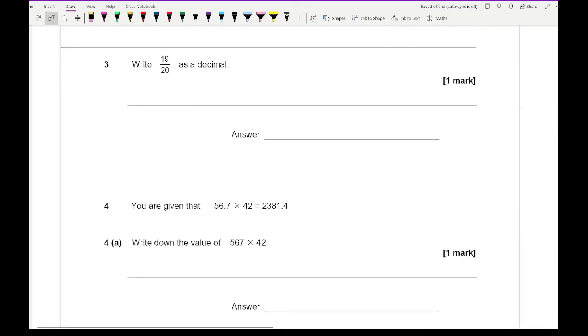Moving on to question three, write 19 over 20 as a decimal. What I want to do is make the denominator a nice number. Let's turn it over to make it over 100, so we need to multiply both by 5. 19 times 5 gives me 95. So the correct answer is 0.95.